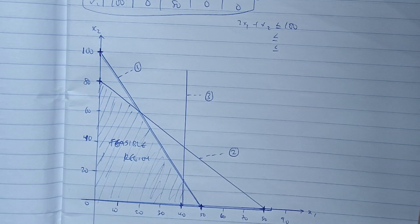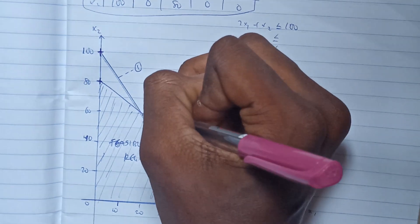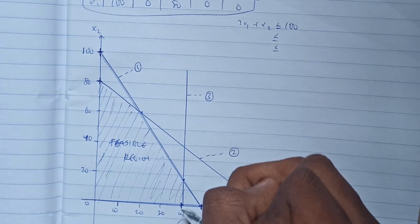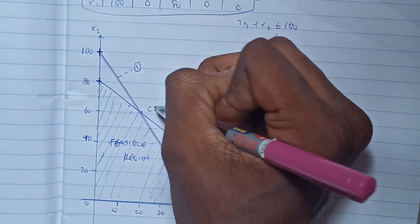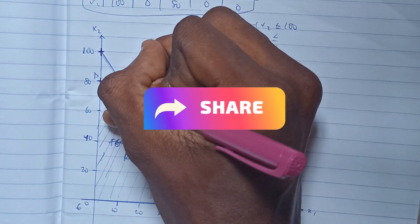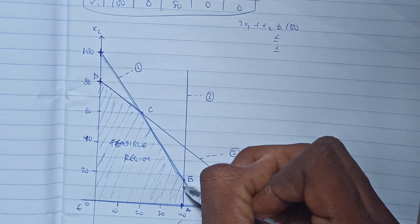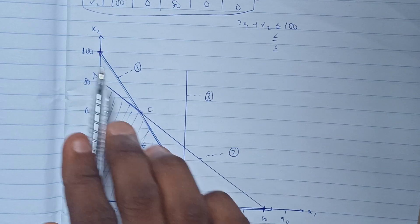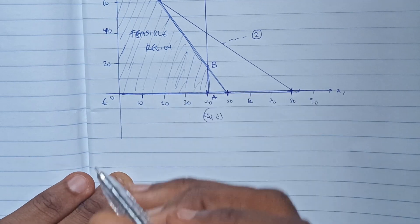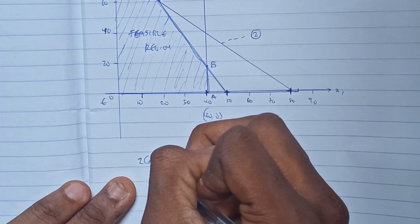After identifying the feasible region, we need to map out the corner points where the boundary lines meet. We label them: point A at (40, 0), point B, point C, point D at (0, 80), and point E at the origin. These corner points — A, B, C, D, E — form the decision points, and we need to find the coordinates of each one.